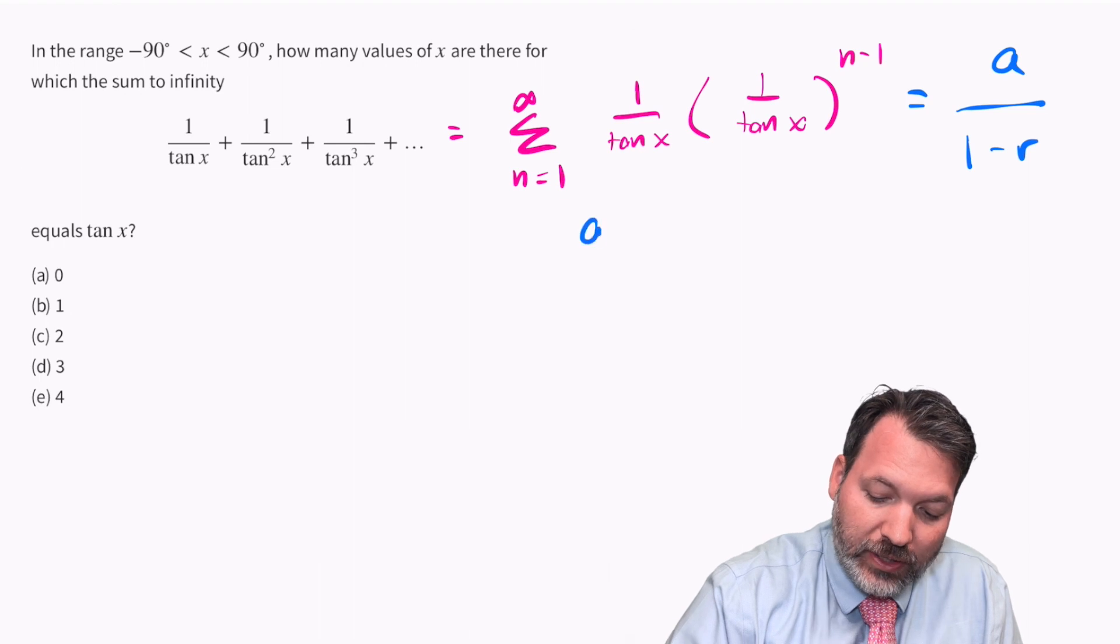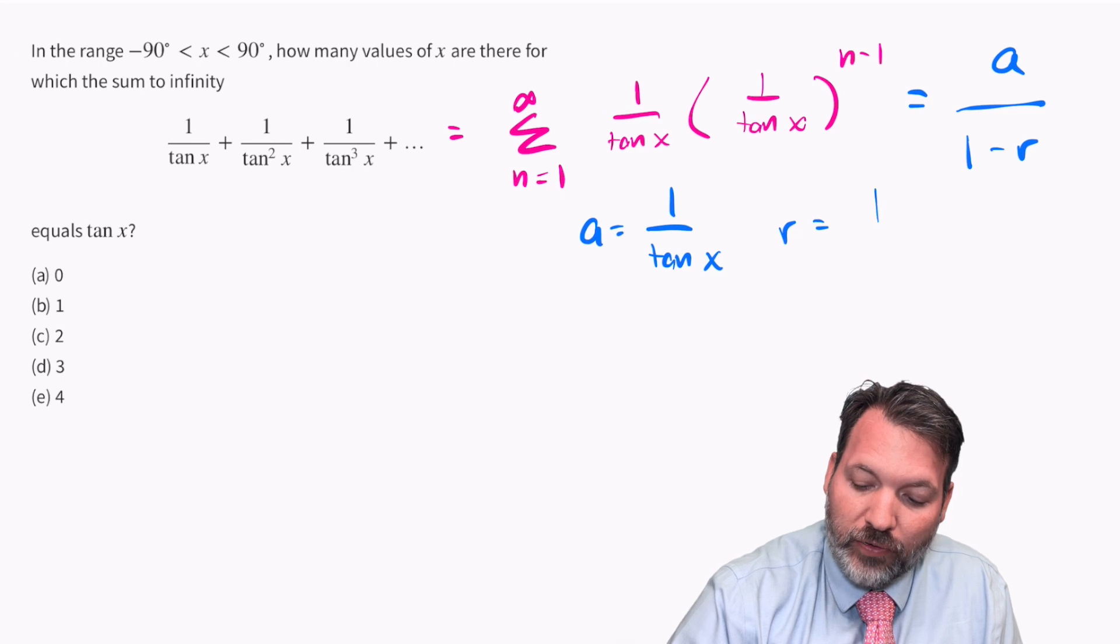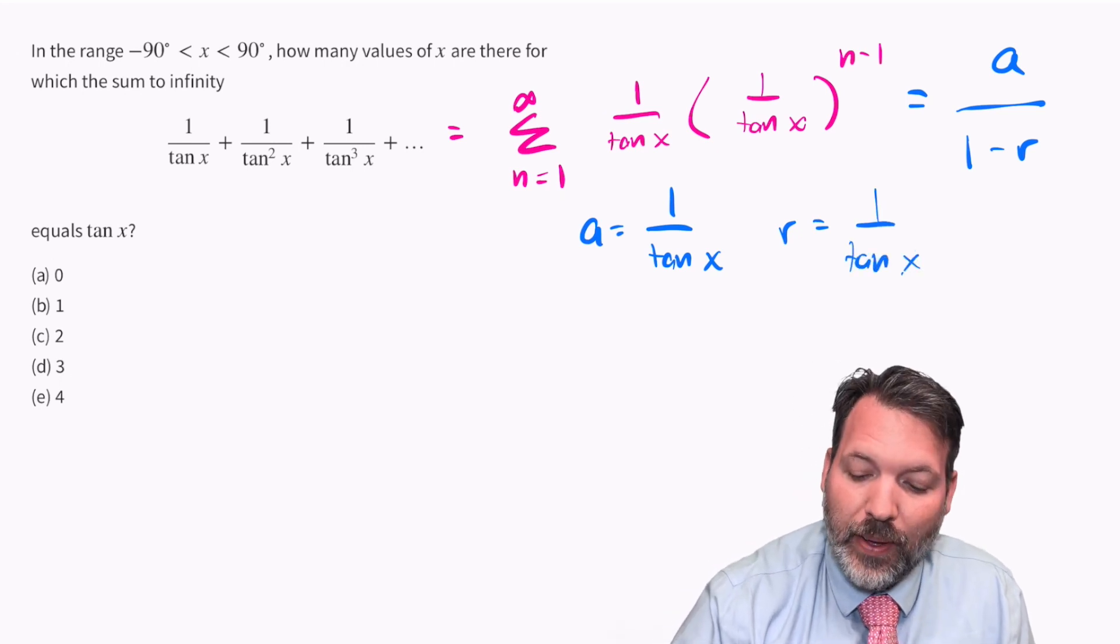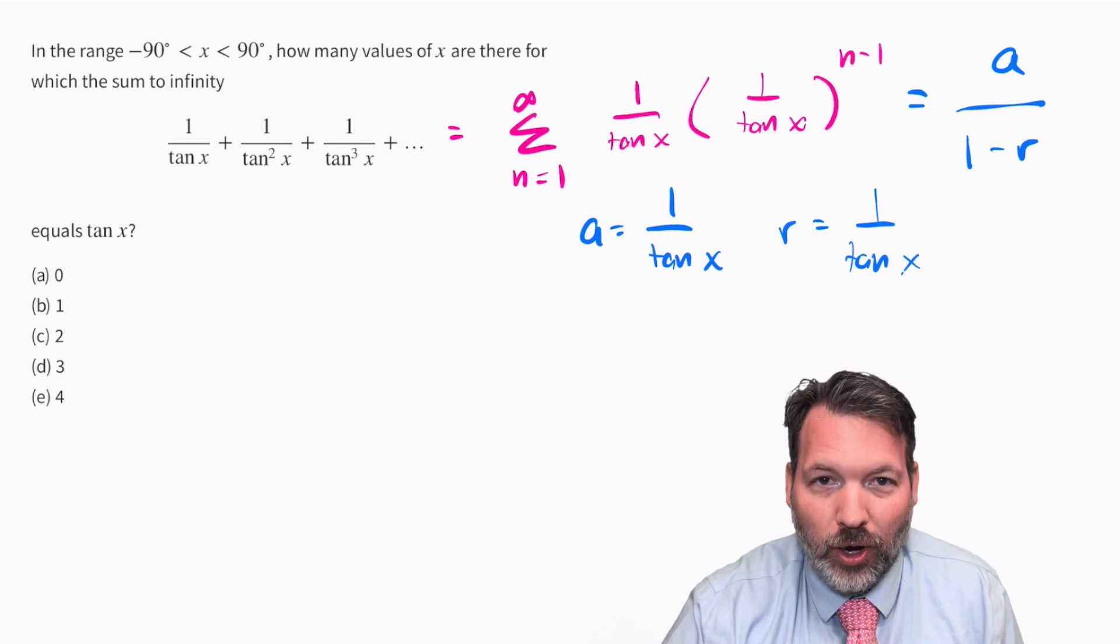Now for our particular purposes, a and r happen to be the same. Both of them are 1 over tangent x. But before we go ahead and plug that in, we do need to remember there is something important about that ratio r.